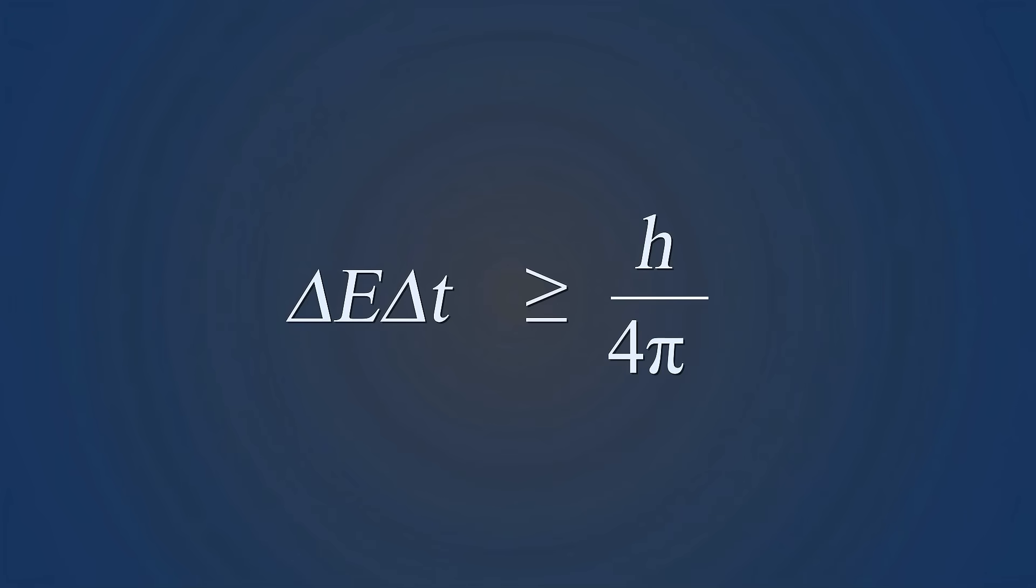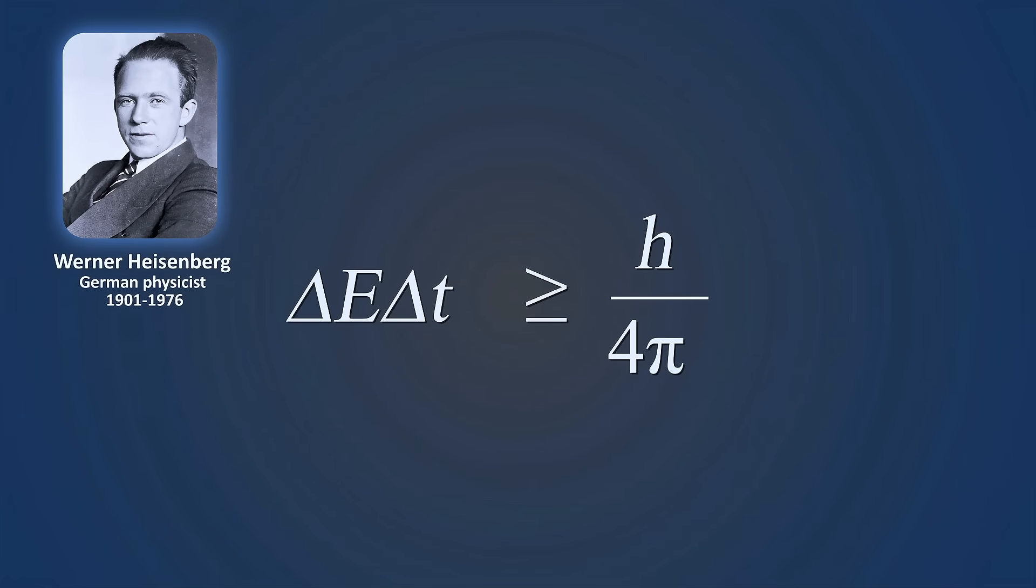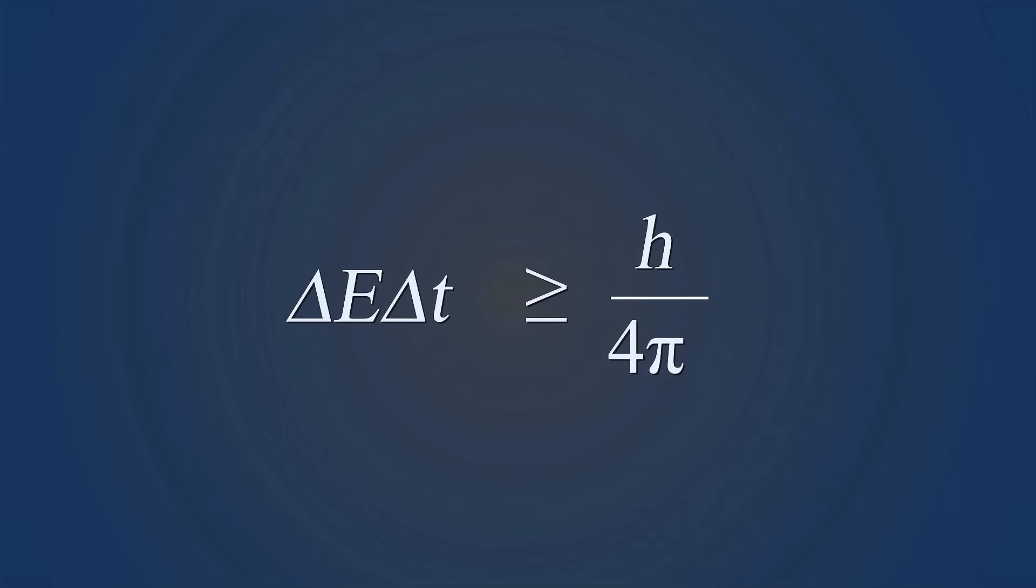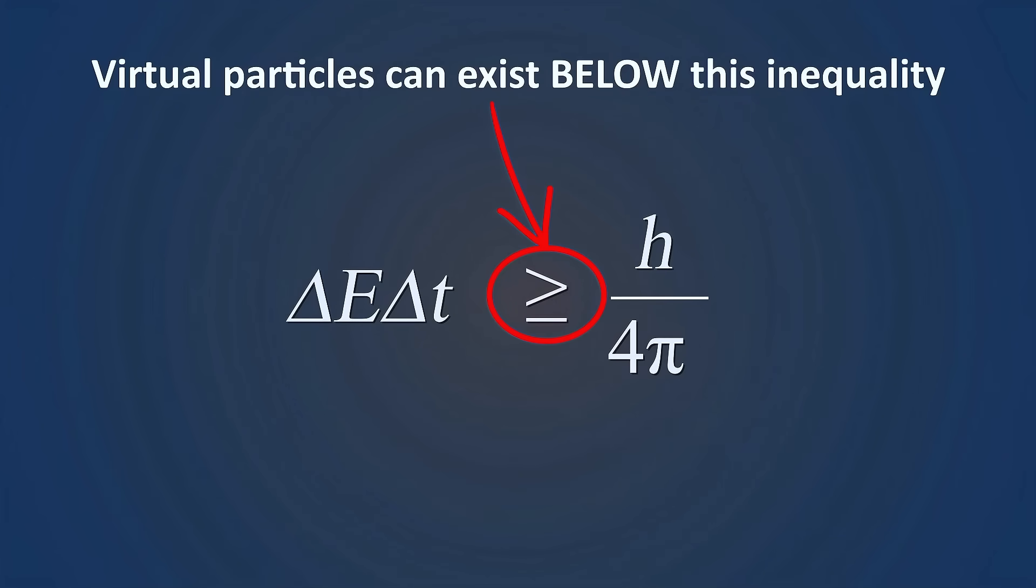Let's look at what causes these virtual particles. We can understand it by looking at the Heisenberg uncertainty principle, formulated by Werner Heisenberg in 1927. One way to express this principle is in terms of energy and time, like this. This says that the uncertainty in energy, delta E, times the uncertainty in time, delta T, has to be greater than or equal to a constant, which is Planck's constant divided by 4 pi. All measurable real particles obey this uncertainty.